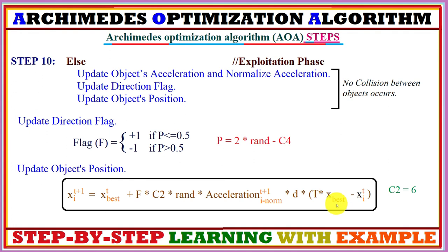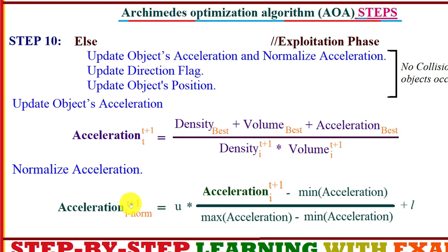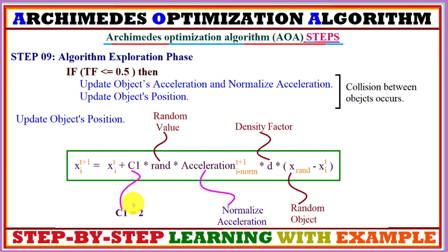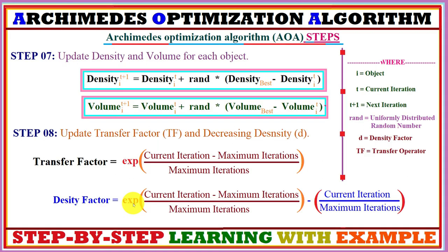We are calculating values for acceleration: if the acceleration value is high, the object is far from the global solution. The acceleration value decreases with time (i.e., with iterations). If the acceleration value is lower, the object is in the exploitation phase. This is how the balance between exploration and exploitation is maintained. If this balance is not maintained, the algorithm easily gets stuck in local optima, so normalized acceleration is used to maintain this balance.